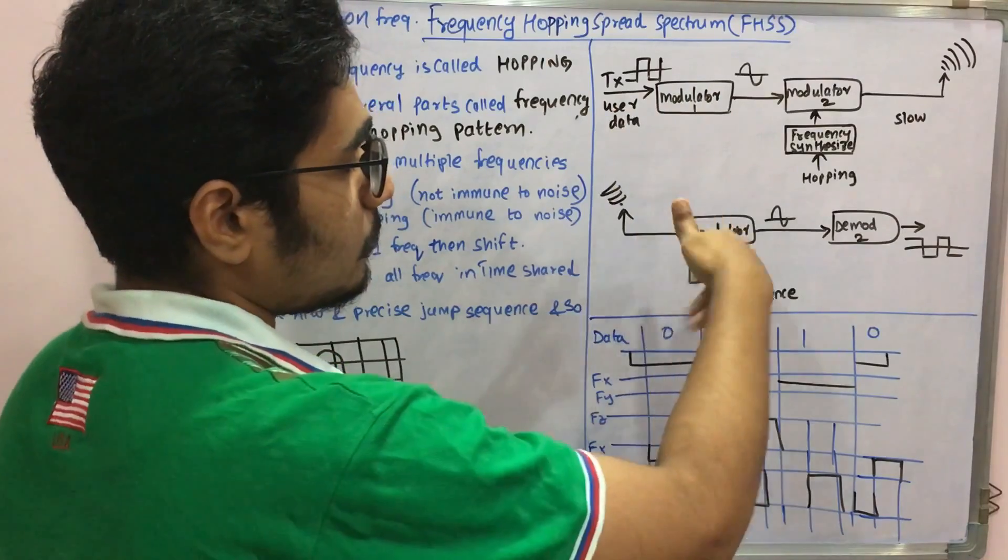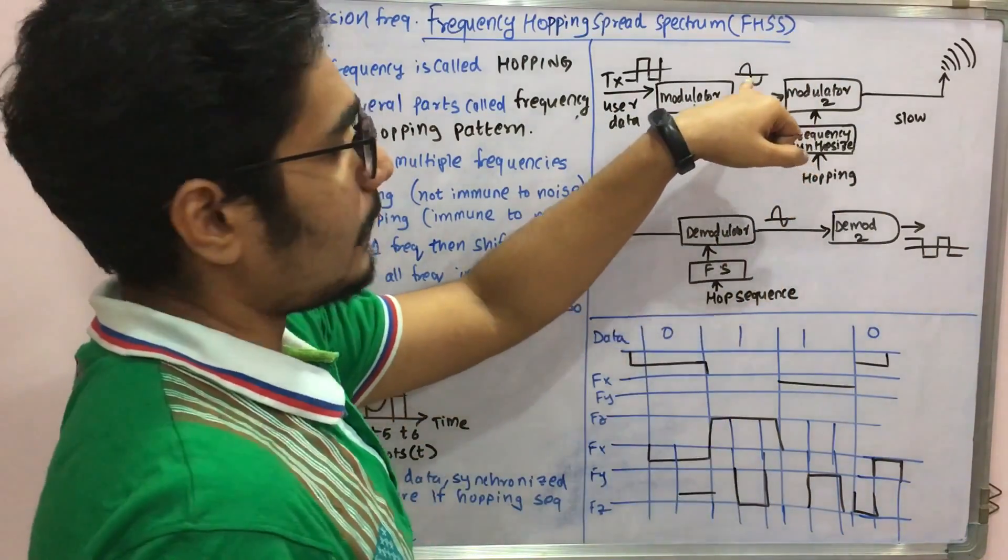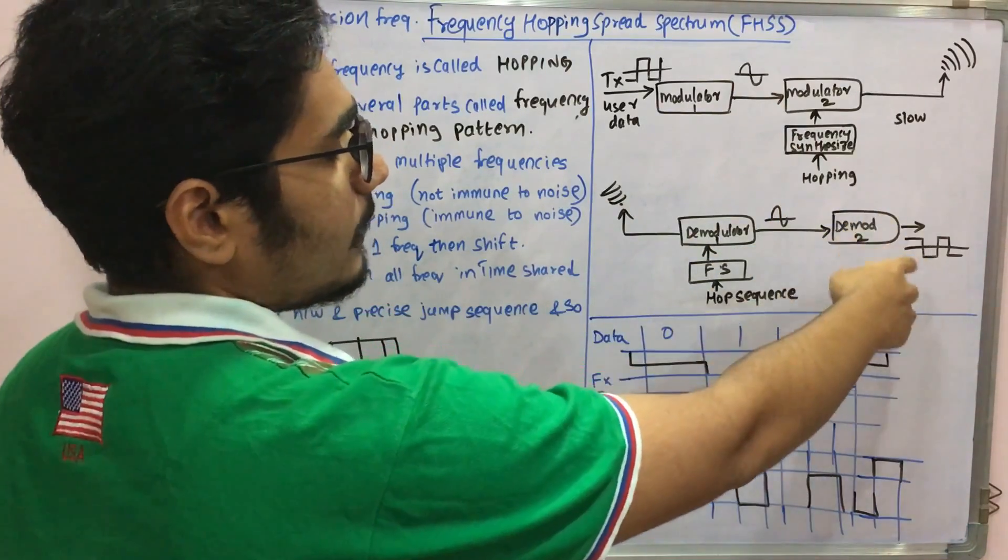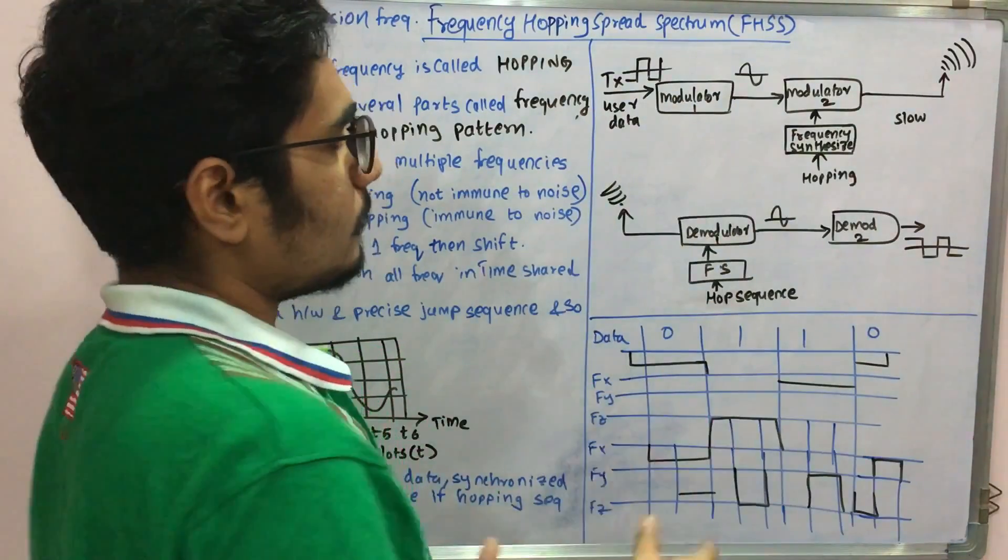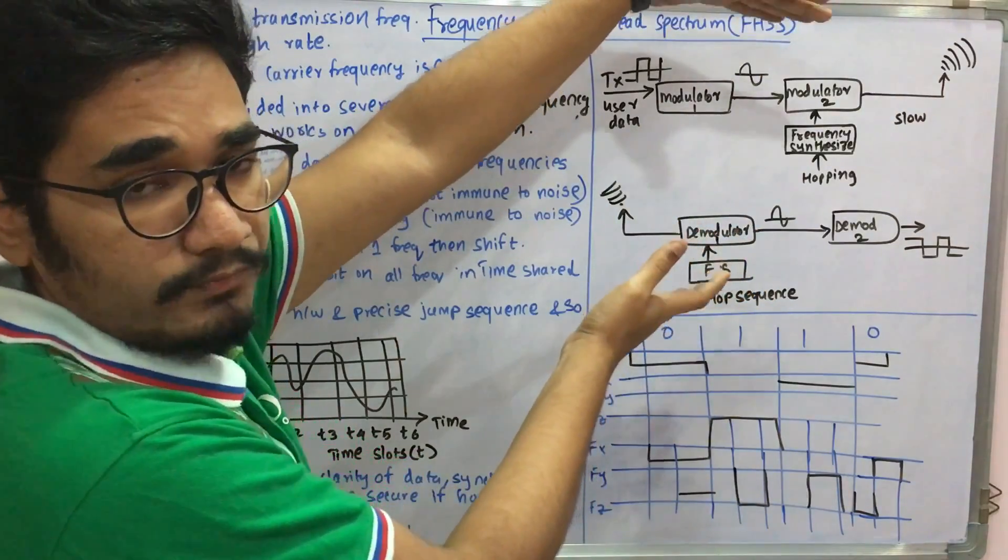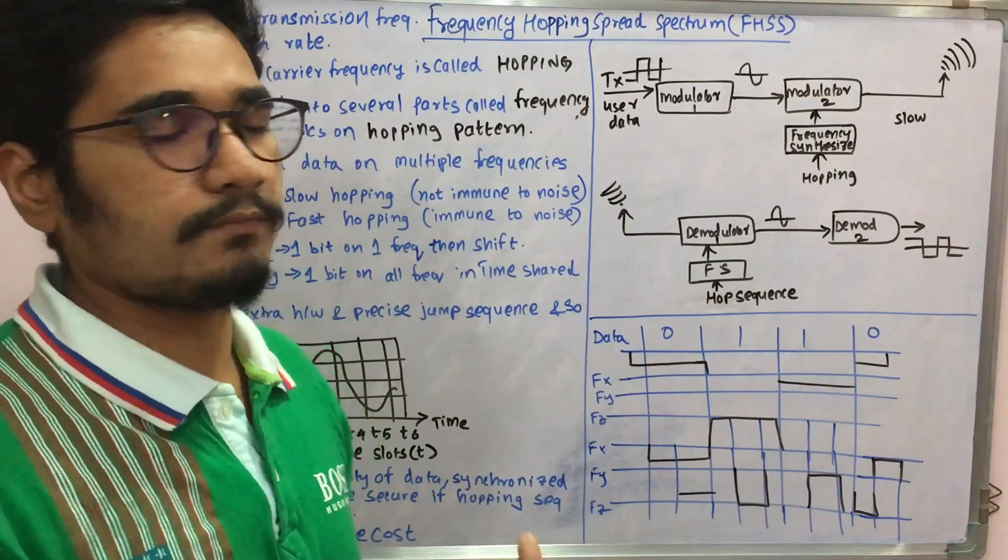the frequency synthesizer to regenerate back the original sinusoidal data. Then demodulator 2 is used to bring back the user data. It works in a reverse manner. The hardware cost, this setup, is costly in FHSS. That's the only drawback in this FHSS technique. Rest all it's fine and provides good security.